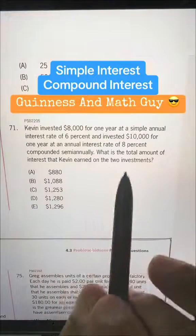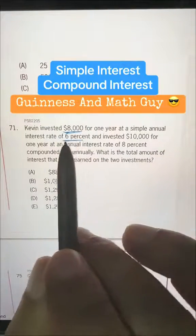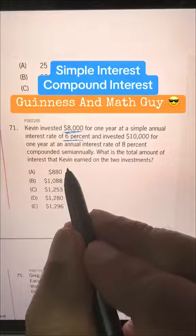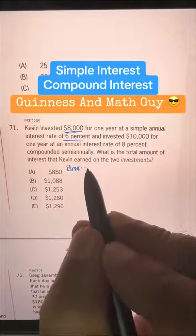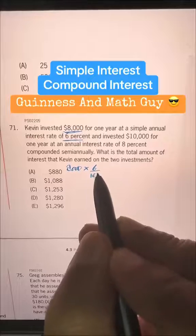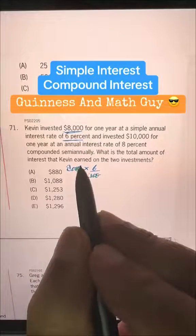So both the investments are for one year. One is $8,000 at simple interest 6%. This is easier. So let's do that. $8,000 times 6%. Now we can cancel these two zeros with these two zeros.